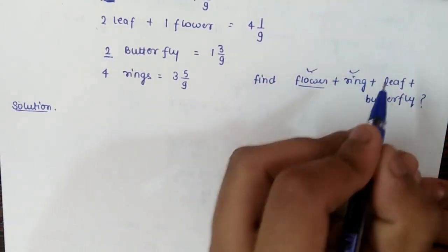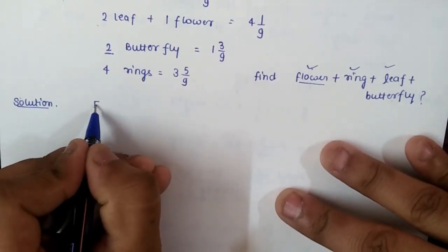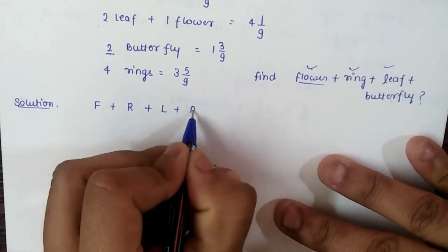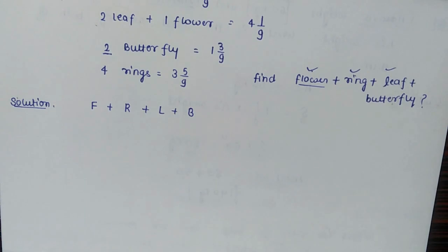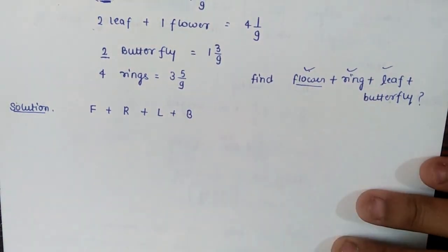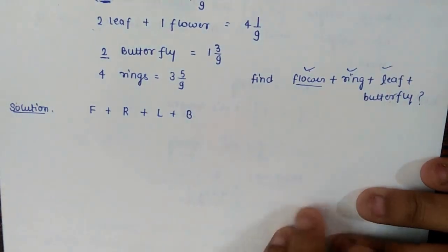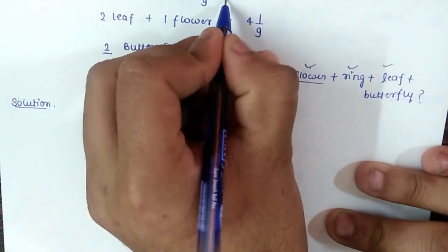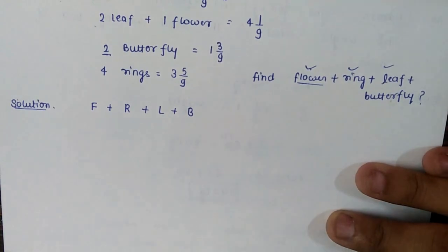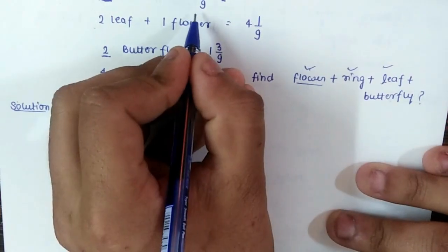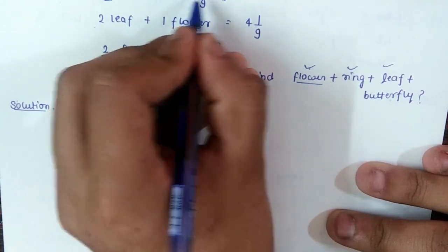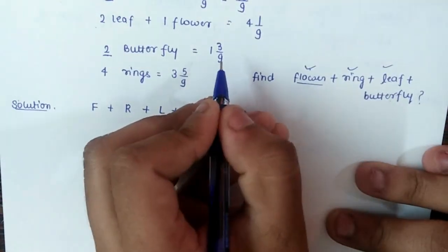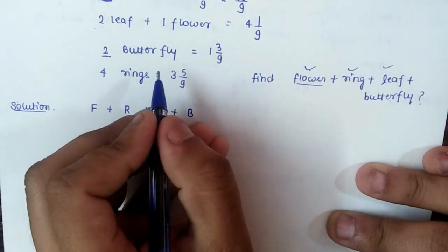We need to calculate the individual values of the flower, ring, leaf, and butterfly, but those values aren't directly given. I suggest converting the mixed fractions into improper fraction form — numerator over denominator — so calculations are easier.